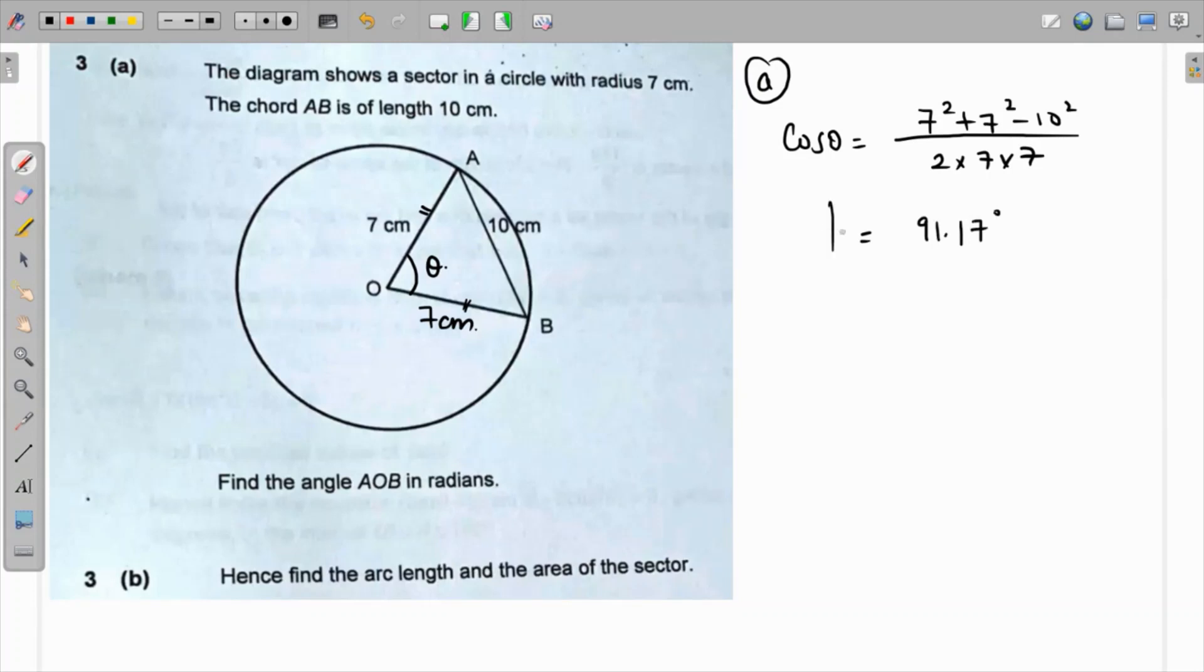So this is an obtuse angle and it is 91.17 degrees. For part b we have to find the length of the arc and the area of the circle.